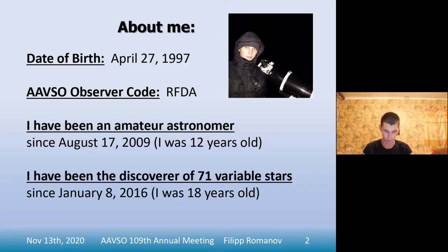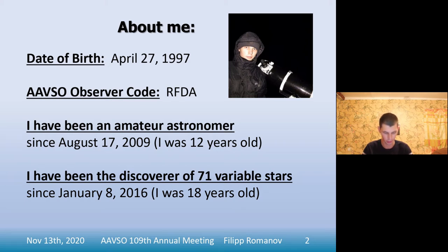The second slide is about me. I'm 23 years old. I have been an amateur astronomer for over 11 years based on self-education. I am a member of the AAVSO and I plan to go to university to study astronomy. The first variable star discovered by me was registered in the International Variable Star Index almost five years ago. Besides 71 variable stars, I am also the discoverer of planetary nebulae candidates, astronomical transients, and possible double stars.